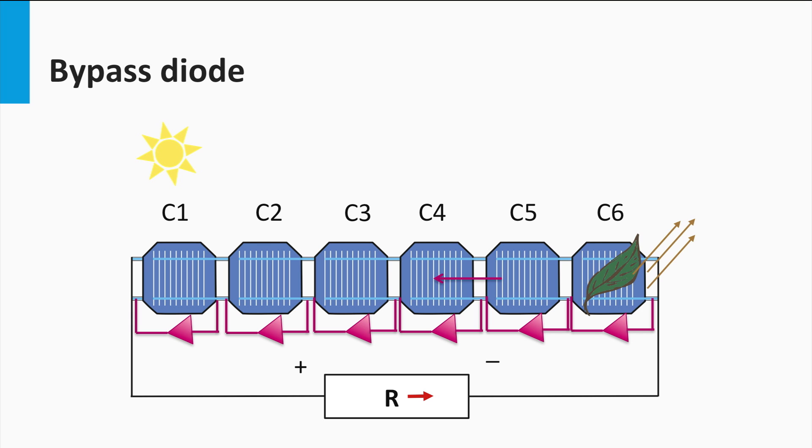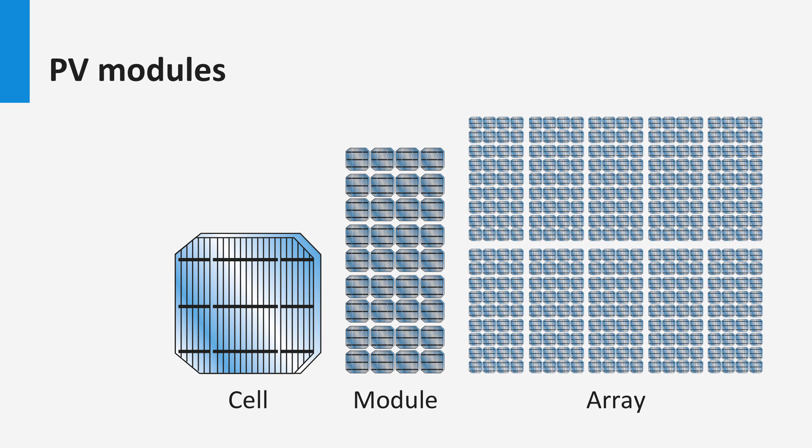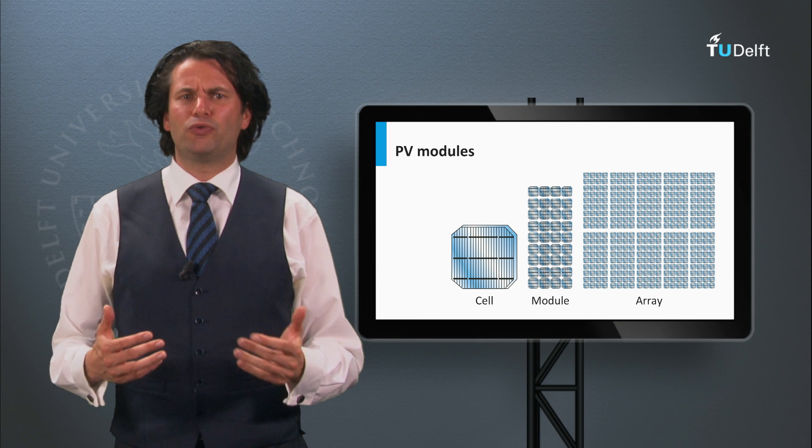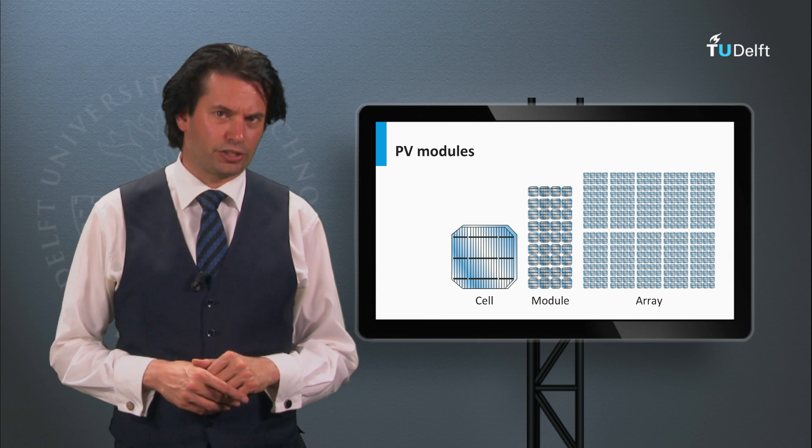In the case that one cell is shaded, due to the biasing of the other cells, the bypass diode starts to pass current through. As a result, the current can go around the shaded cell, and the module can still produce the current equal to that of a non-shaded single solar cell. As you can see, going from a solar cell up to module level gives rise to a whole new set of technical considerations.